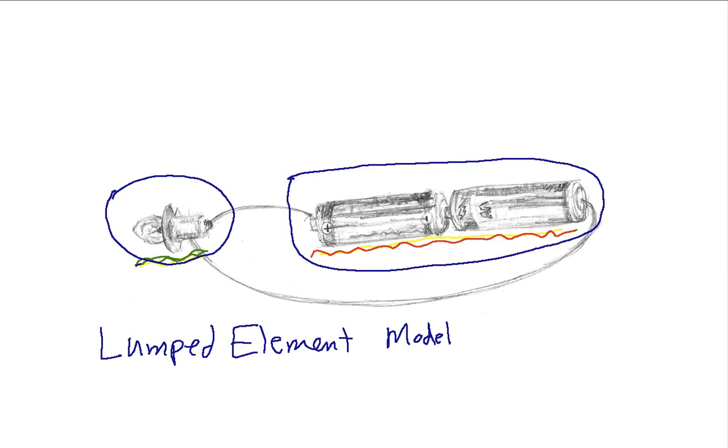And the alternative to a lumped element model is what you often see called a distributed element model. Distributed elements are things like a wire when you're looking at how fast it takes for electrical signals to propagate through that wire. Or perhaps if you're looking at an antenna.